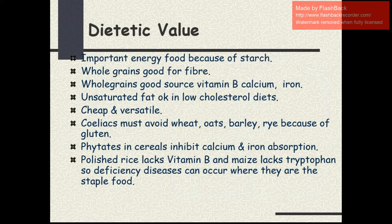The dietetic value: it is important as an energy food because of the starch. Whole grains are good for fiber. Whole grains are a good source of vitamin B, calcium and iron. It contains unsaturated fatty acids, so it gives low cholesterol to our diet. It is cheap and versatile. For celiac patients, we have to avoid wheat, oats, barley and rye because of the gluten. Phytates, which are the anti-nutritional factors present in cereals, inhibit calcium and iron absorption. Polished rice lacks vitamin B. Maize lacks tryptophan, so deficiency diseases can occur where they are the staple food.